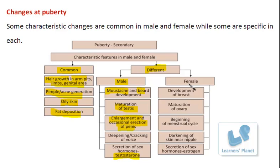In the case of females, there is development of the breast, which has already been explained. Besides this, there is the maturation of the ovary. The ovary is the female gonad responsible for the production of the ovum, and it also secretes the sex hormones estrogen and progesterone. These hormones bring about the different changes in females during secondary growth.